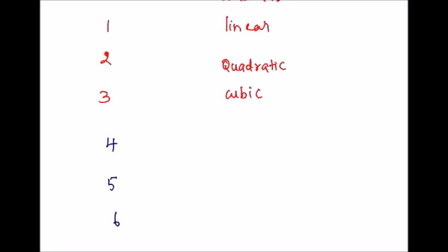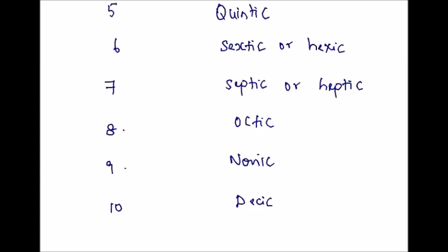For degree 4, you can say either it is quartic or biquadratic. Let me write the names for all the types of polynomial till degree 10. I have given the names for the rest of the degrees. When you are dealing with degrees, you have to look for the highest one. Now let me show few examples so you will get a better idea.